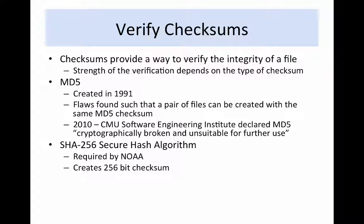The strength of the verification depends on the type of checksum. The MD5 checksum algorithm was created in 1991 and is widely used. However, flaws were found in the algorithm such that a pair of dissimilar files can be created with the same MD5 checksum. This means that a file can be corrupted — the bits in the file changed — but the MD5 checksum can remain the same. In 2010, the CMU Software Engineering Institute declared that MD5 was cryptographically broken and unsuitable for further use.